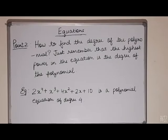Let's move on to point 2. How to find the degree of the polynomial? Just remember that the highest power in the equation is the degree of the polynomial. For example, if you take the equation 2x to the power 4 plus x cube plus 4x square plus 2x plus 10, then here the degree of the polynomial is 4 because 4 is the highest power in the equation.